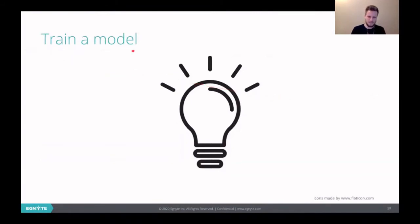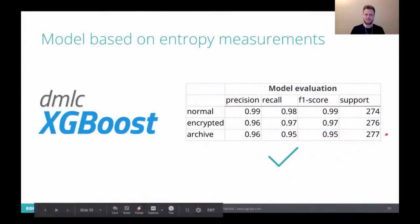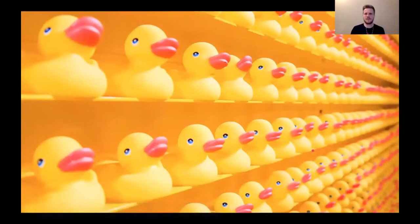So we actually trained a model, an XGBoost model, trained on three classes: on the normal files, encrypted files and archives. We evaluated it and we can see that the metrics are pretty high. So we can go with that. But now we are doing something with files and we need to be aware that when we have a big scale, a lot of customers, a lot of files, then we need to be careful to not kill the production. So we need to optimize this as we can to touch as small number of files as possible.